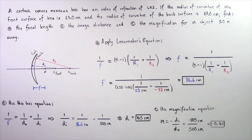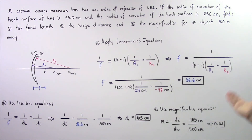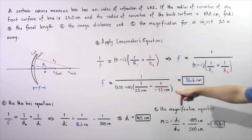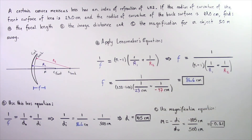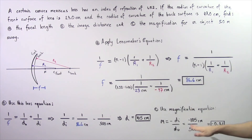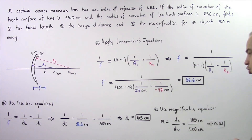Now let's solve part C. We use the lateral magnification equation: M equals negative the image distance divided by the object distance. So negative 105 centimeters divided by 500 centimeters gives a magnification of approximately negative 0.21. This is our magnification, 105 centimeters is our image distance, and 86.6 centimeters is our focal length.